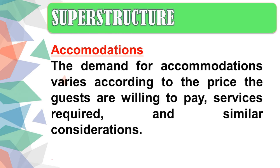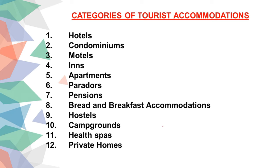Under superstructure, we have accommodation. The demand for accommodation varies according to the price guests are willing to pay, services required, and similar considerations. Categories of tourist accommodation include hotels, condominiums, motels, inns, apartments, paradors, pension houses, bed and breakfast accommodation, hostels, campgrounds, health spas, and private homes.